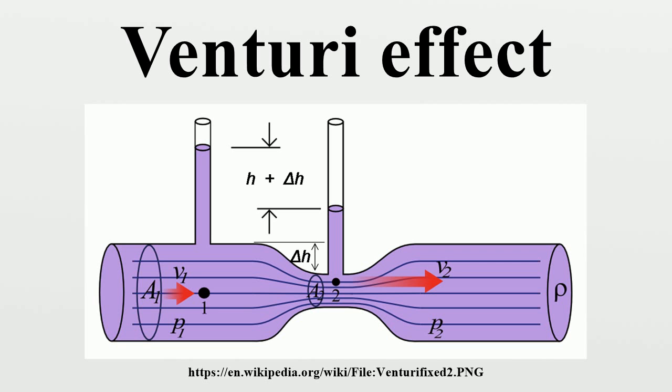The theoretical pressure drop at the constriction is given by where ρ is the density of the fluid, v₁ is the fluid velocity where the pipe is wider, and v₂ is the fluid velocity where the pipe is narrower.